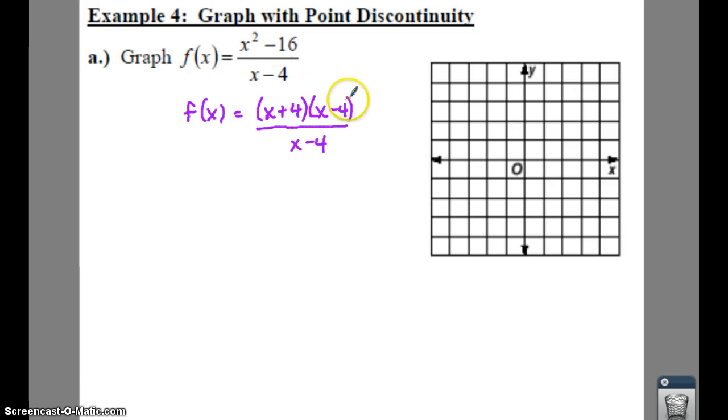If you notice what cancels out, your x minus 4s. Well those are important, so totally mark them out. But you're going to have the line. f of x equals x plus 4.